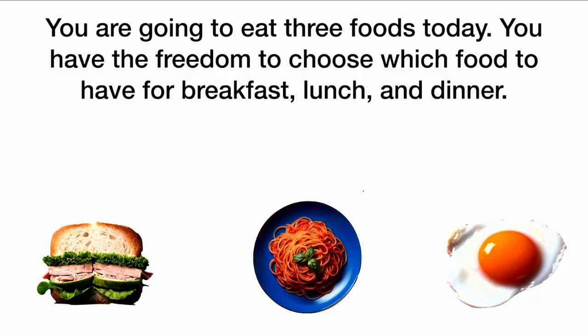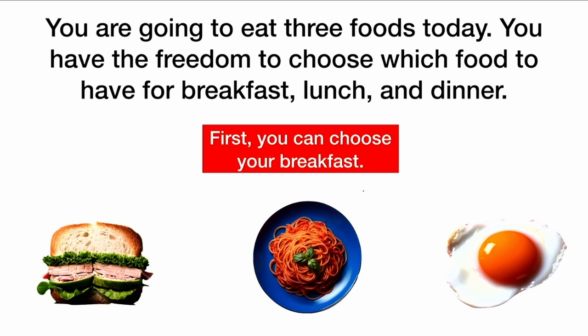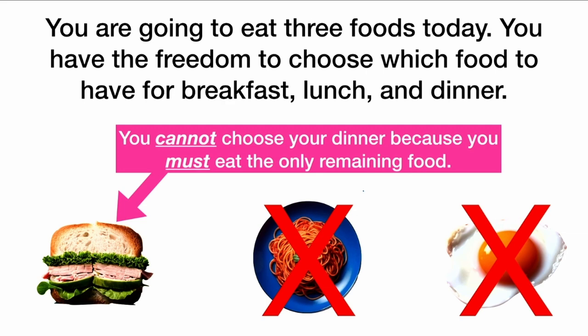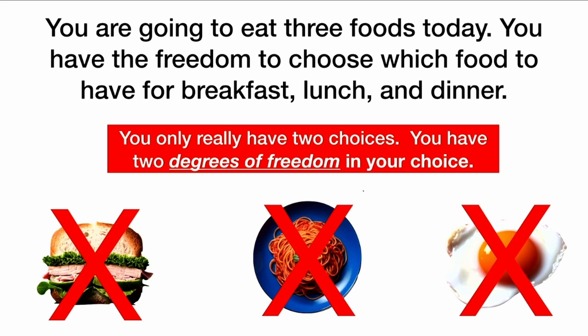You are going to eat three foods today. You have the freedom to choose which food to have for breakfast, lunch, and dinner. So first you can choose your breakfast — you decide to have spaghetti. Then you can choose any of the two remaining foods for lunch, and you decide to have eggs. Now you cannot choose your dinner because you must eat the only remaining food, the sandwich. So even though there are three meals, you really only have two choices. You have two degrees of freedom in your choice.